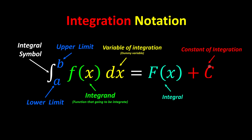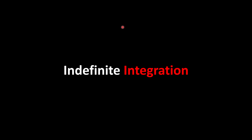We need to add C when we have indefinite integrals. Indefinite means there are no limits applied to the integration. For definite integration, which includes upper and lower limits, we don't need to include the constant of integration because the constants cancel out — we'll learn why later.